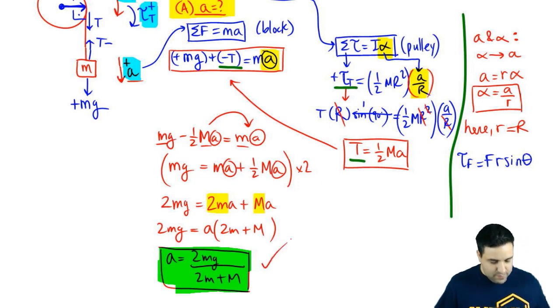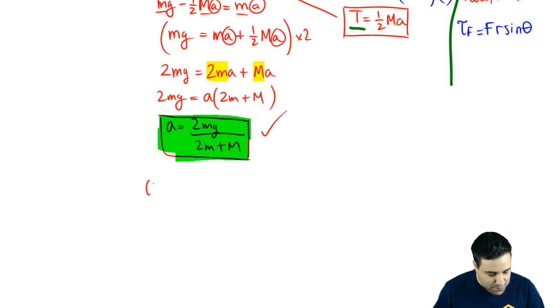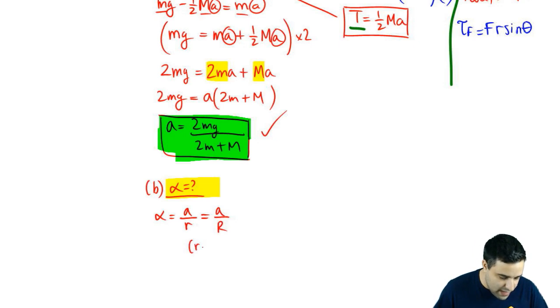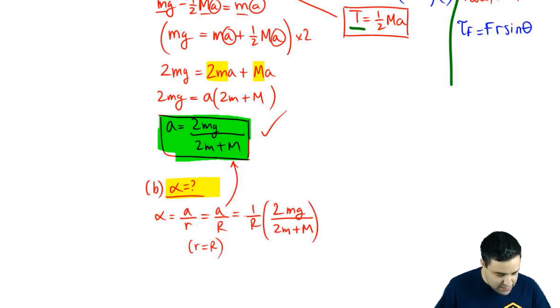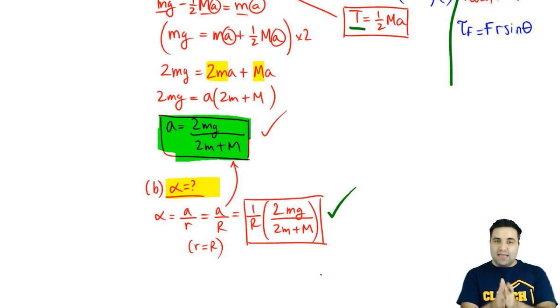Part B is much simpler. Basically, once you find one of the accelerations, finding the other acceleration will be much easier. For part B, we're looking for alpha. And to find alpha, just remember alpha equals A over little r, which in this case is A over big R because little r happens to be the same as big R. A is this guy right here. So just plug it in. So we're going to have 1 over R times 2mg over 2m plus big M. This is the final answer for alpha. And that's it. That's it for this one. Let me know if you have any questions and let's keep going.